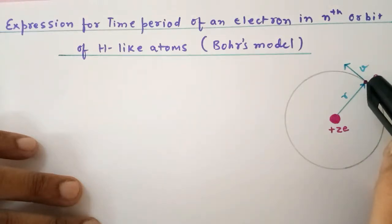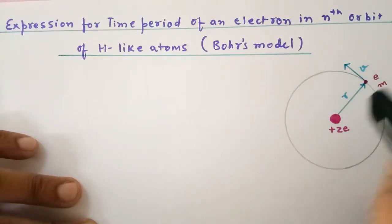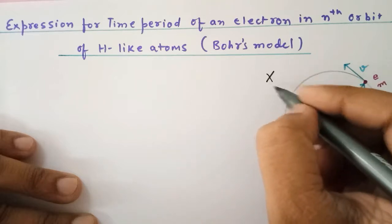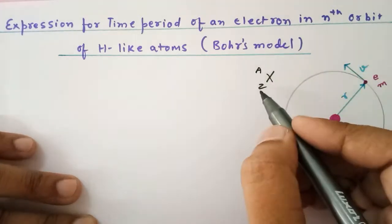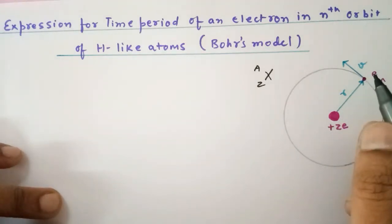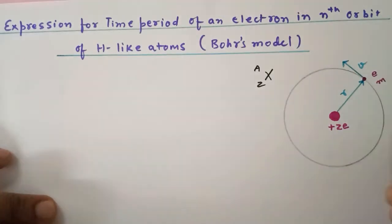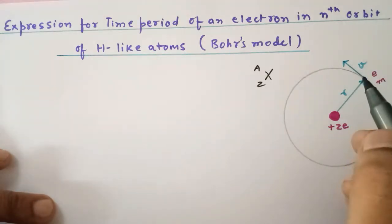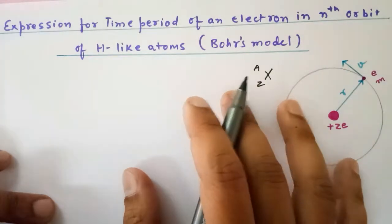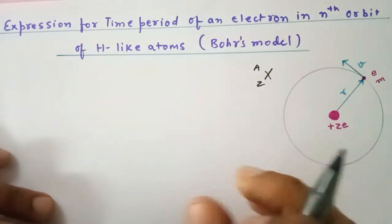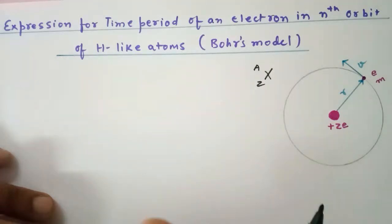Here is an electron in the nth orbit of a hydrogen-like atom. Suppose the element is atom X with atomic number Z, so plus ZE would be the charge on the nucleus, and minus E would be the charge of an electron, but we do not consider the negative sign. The mass of the electron moving in a circular path is M, and V is the velocity of an electron. For a better understanding, it is better you watch the earlier videos of Bohr's model in which I had derived the expression for energy, velocity, and kinetic energy.